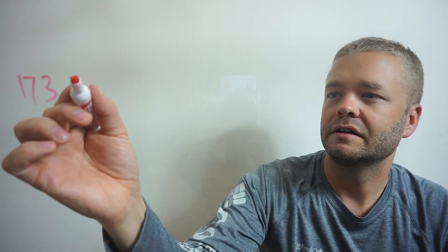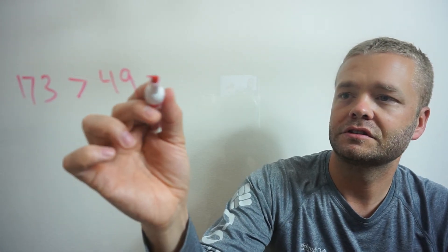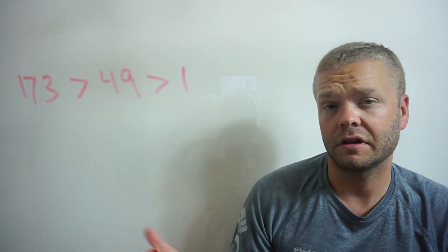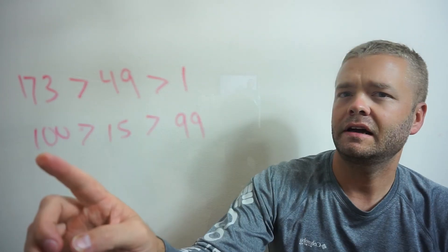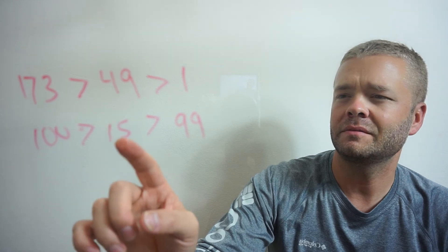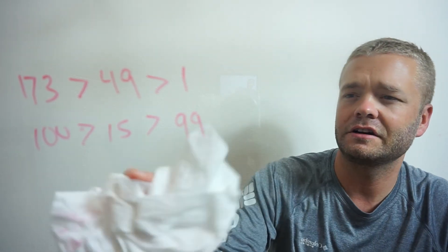Let's do the opposite — greatest to least. 173 is greater than 49, which is greater than 1. That works. But here's what doesn't make sense: 100 is greater than 15, but 15 is not greater than 99. Let's just not do that.